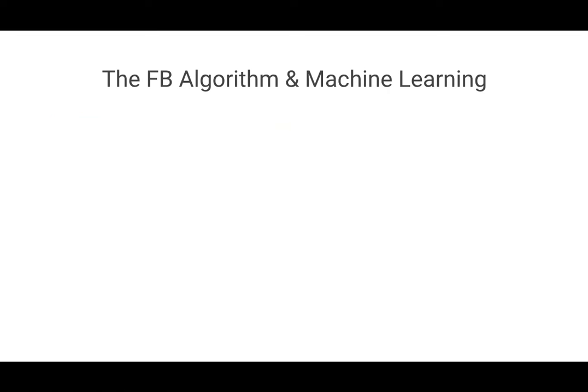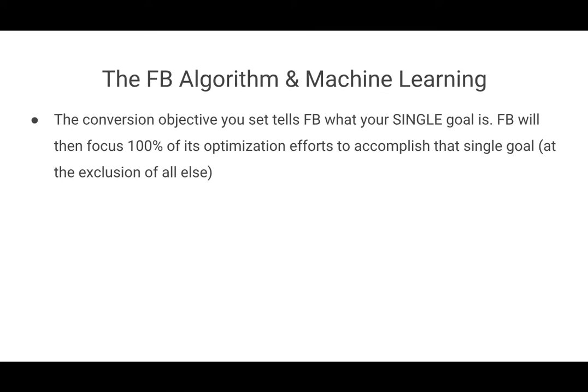The conversion objective that you set is you telling Facebook: "You're starting at point A, I want you to get to point B." The conversion objective tells Facebook what your single objective is. Facebook will then sort of start flailing around for the first one to three days, but ultimately will focus 100% of its optimization efforts to accomplish that single goal at the exclusion of all else.